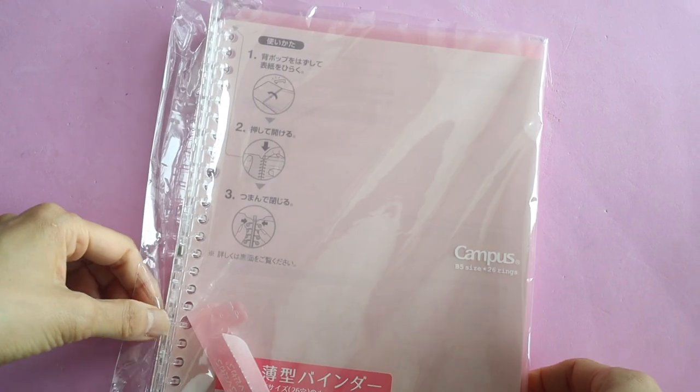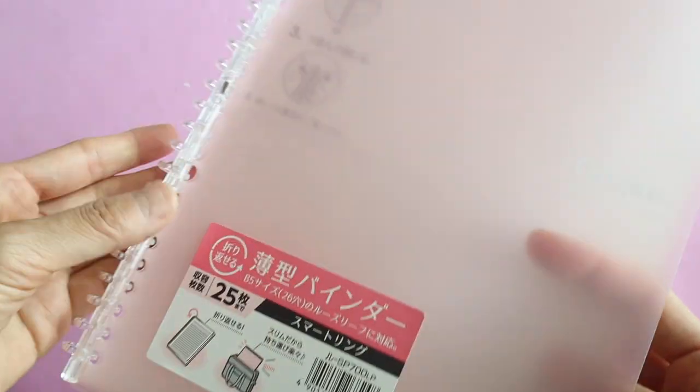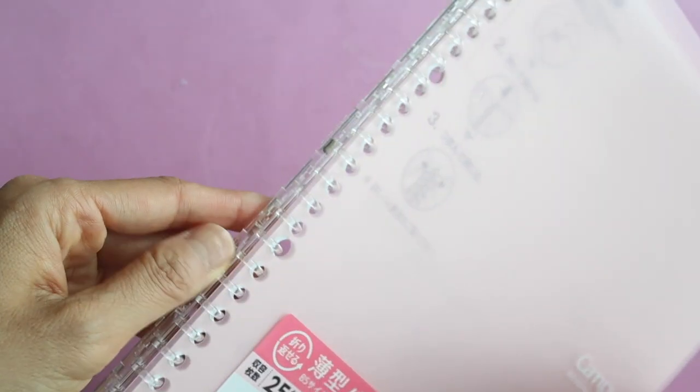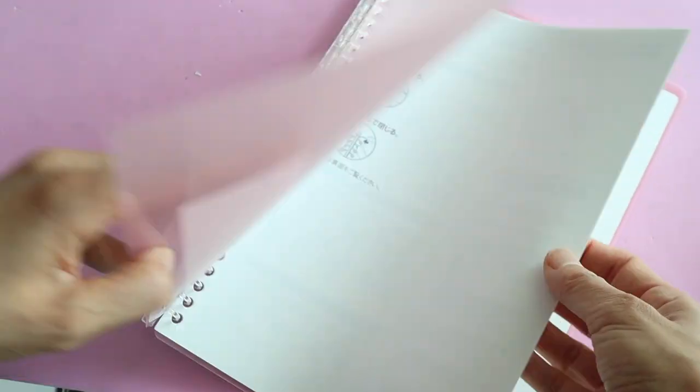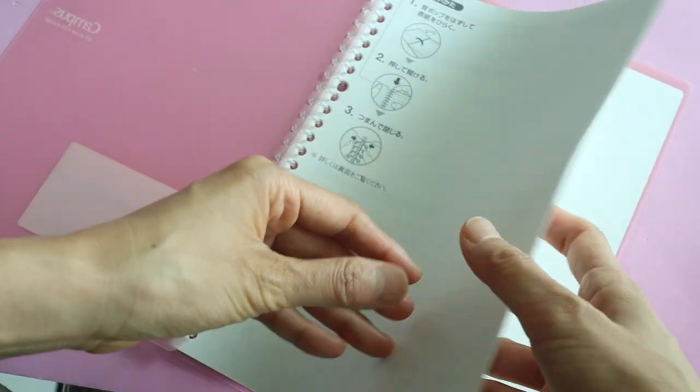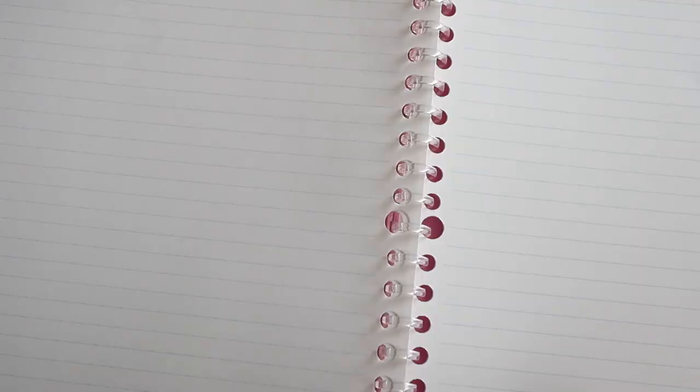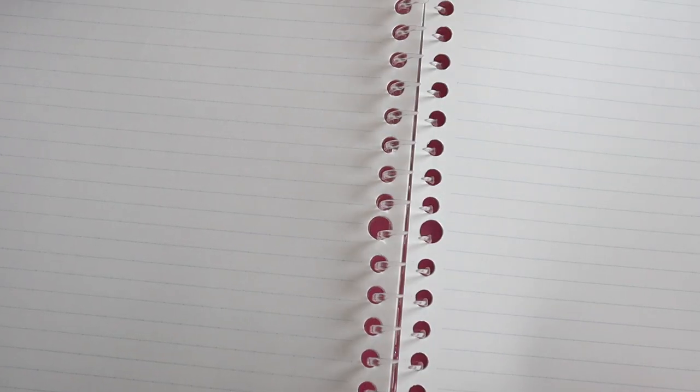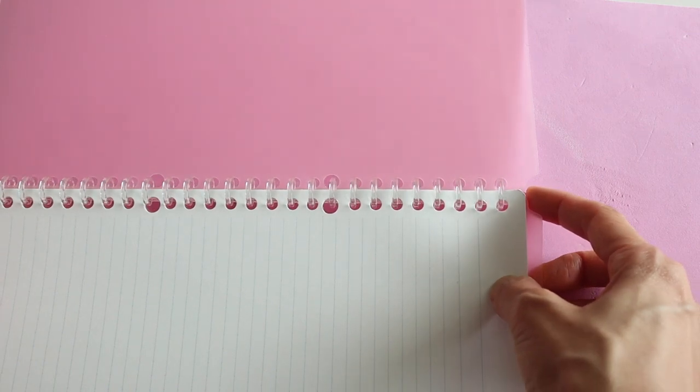If there's ever such a thing as a luxury notebook, then this would be it. This is the campus smart ring binder notebook by Kokuyo. This notebook takes all the good qualities of a binder and a spiral bound notebook and puts them into one item. So like with a binder, you can open it up and take out pages and just rearrange things and add new pages into your notes where they weren't before.